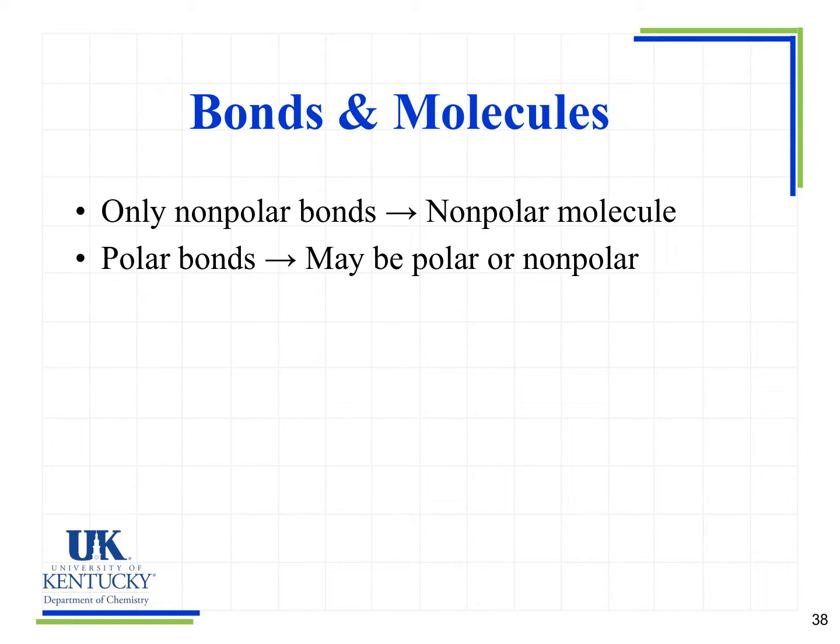A couple things can help guide us. One, if we have only nonpolar bonds, then the molecule is nonpolar. If we have polar bonds, we have to look at those vectors and imagine: are those polar bonds canceling out, or will we be left with some resultant vector? In that case, we'll have a polar molecule.